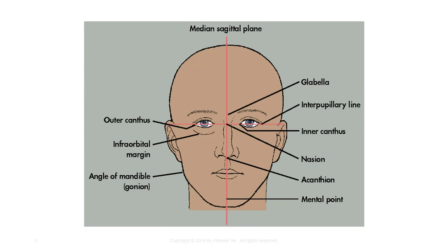The mental point is the very tip of the chin, and the interpupillary line, or IPL, is a perpendicular line between the pupils of the eyes often used for lateral projections.